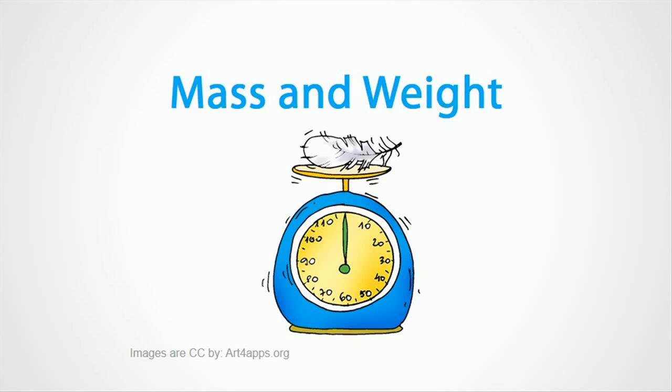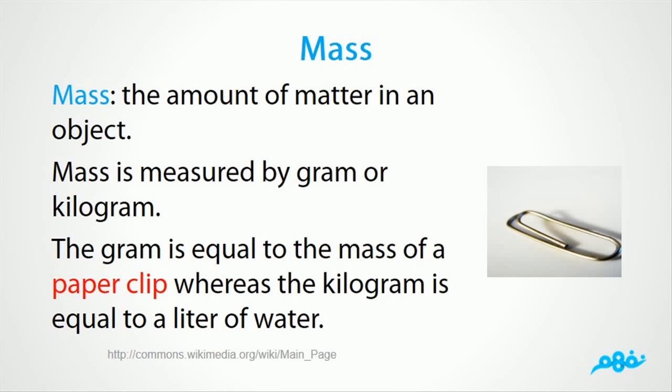Let's start to know mass. Mass is the amount of matter in an object. Mass is measured by gram or kilogram. The gram is equal to the mass of a paperclip, whereas the kilogram is equal to a liter of water.